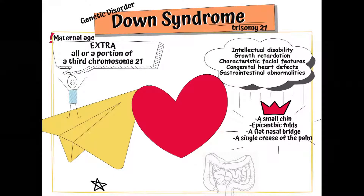Down syndrome may present the following physical characteristics: a small chin, epicanthal folds, a flat nose bridge, a single palmar crease, and a protruding tongue.